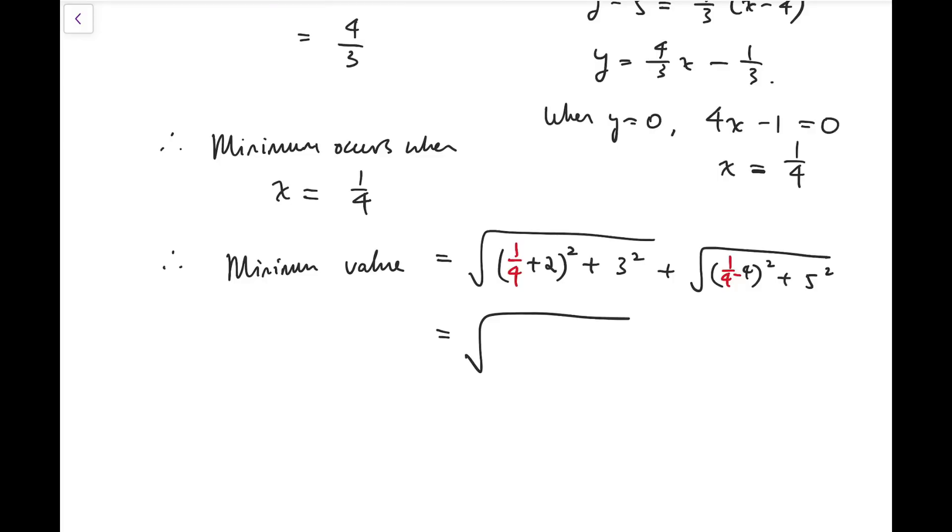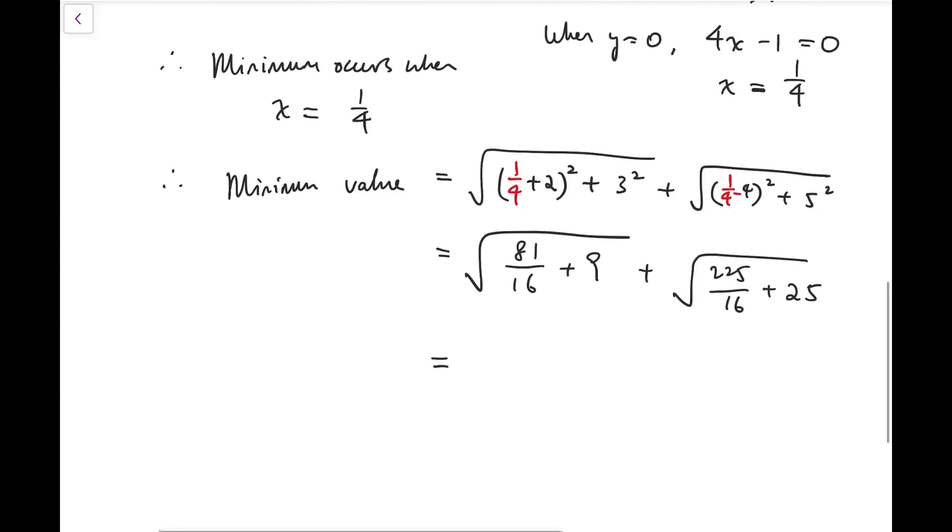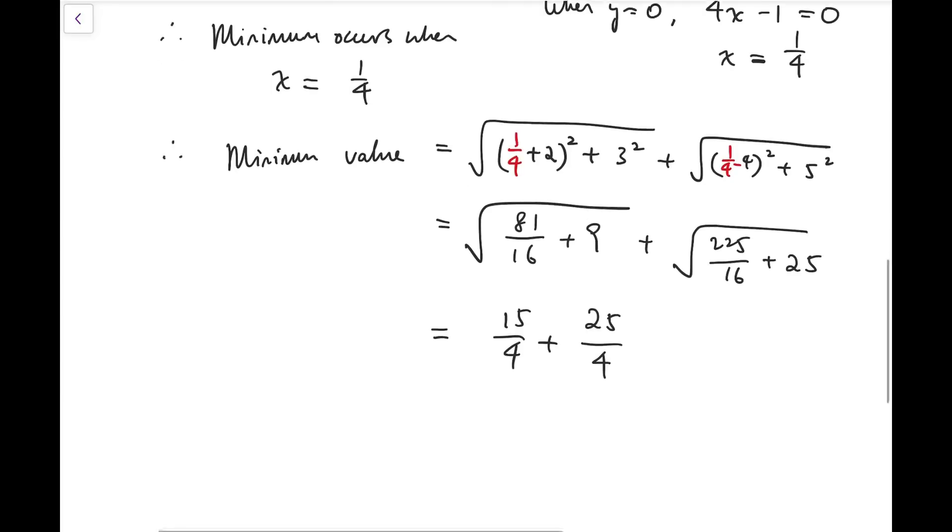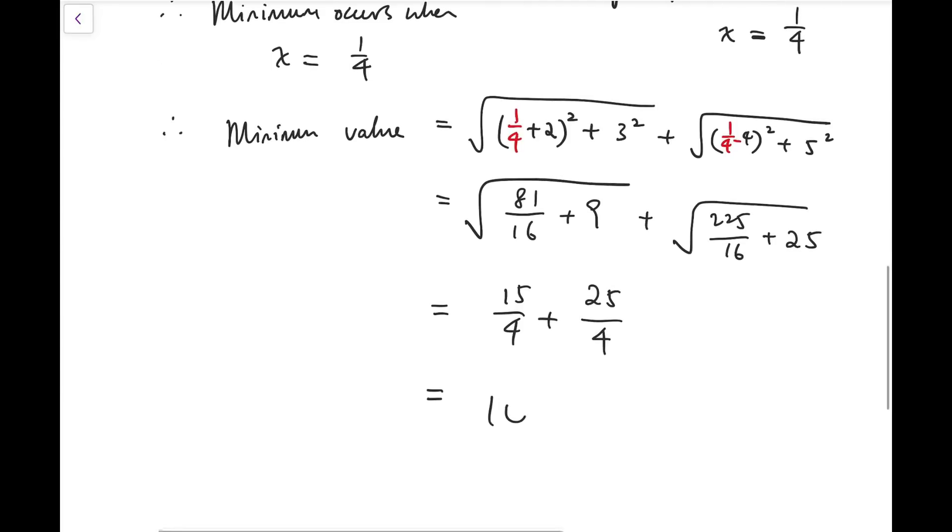So let's compute. So for the first square root, it's 9 over 4 all squared, 81 over 16 plus 9. Well, for the second square root, it's minus 15 over 4 all squared. So 225 over 16 plus 25. So then summing up, for the first square root, we have 225 over 16. So that's 15 over 4 added by the second square root, we have 625 over 16. So that's 25 over 4. And our final answer is 10.